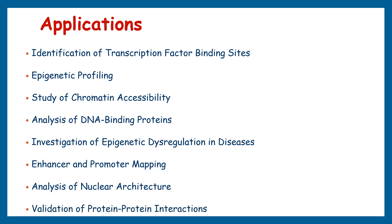ChIP sequencing can help validate protein-protein interactions by identifying genomic regions where a protein of interest binds. If two proteins are known to interact, ChIP sequencing can be used to study their co-localization on the genome. In summary, ChIP sequencing is a versatile technique that has revolutionized our ability to investigate protein-DNA interactions on a genome-wide scale.